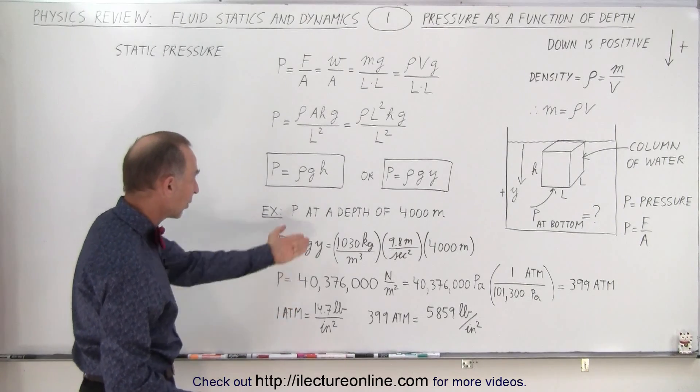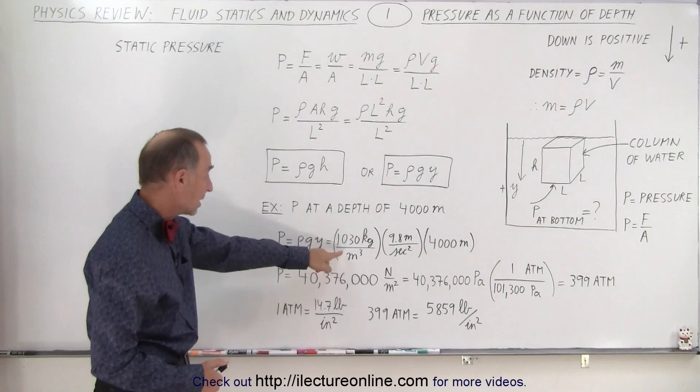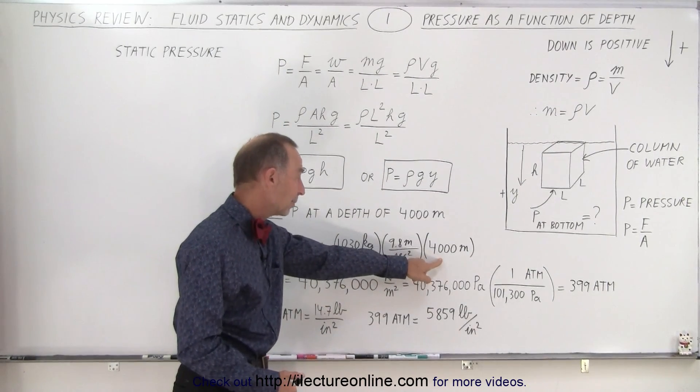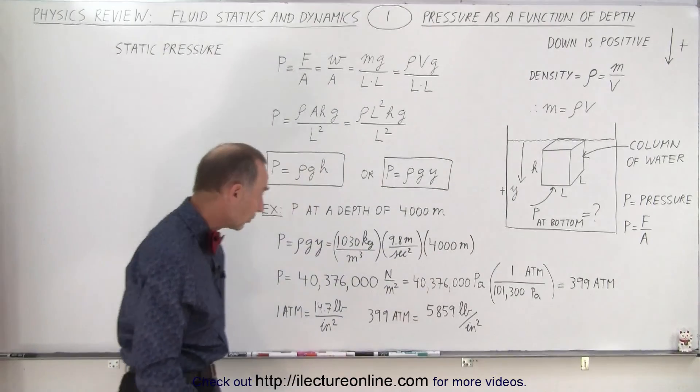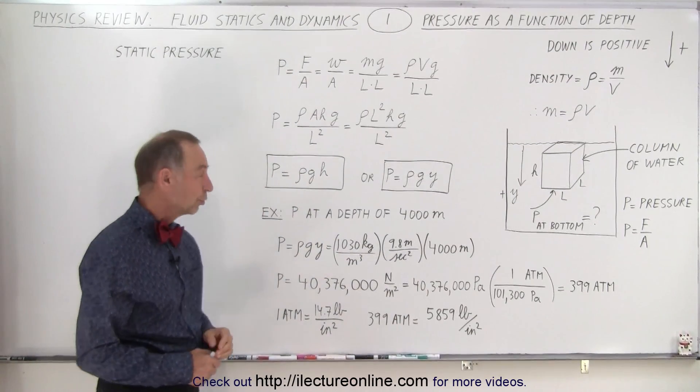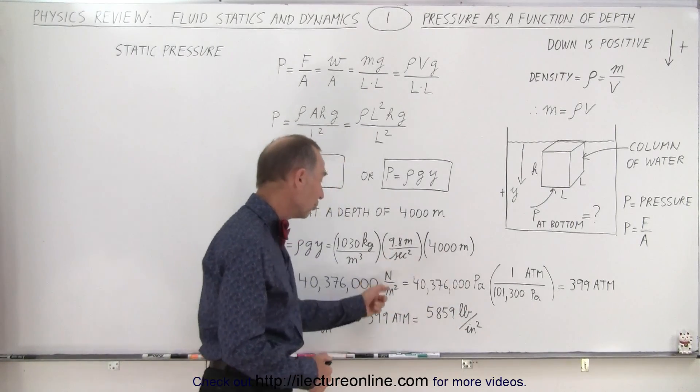Here's an example: what's the pressure at a depth of 4,000 meters in the ocean? We take the density of ocean water, acceleration due to gravity, and the depth of 4,000 meters. You can see it's over 40 million newtons per square meter. We use pascals, which equals newtons per square meter.